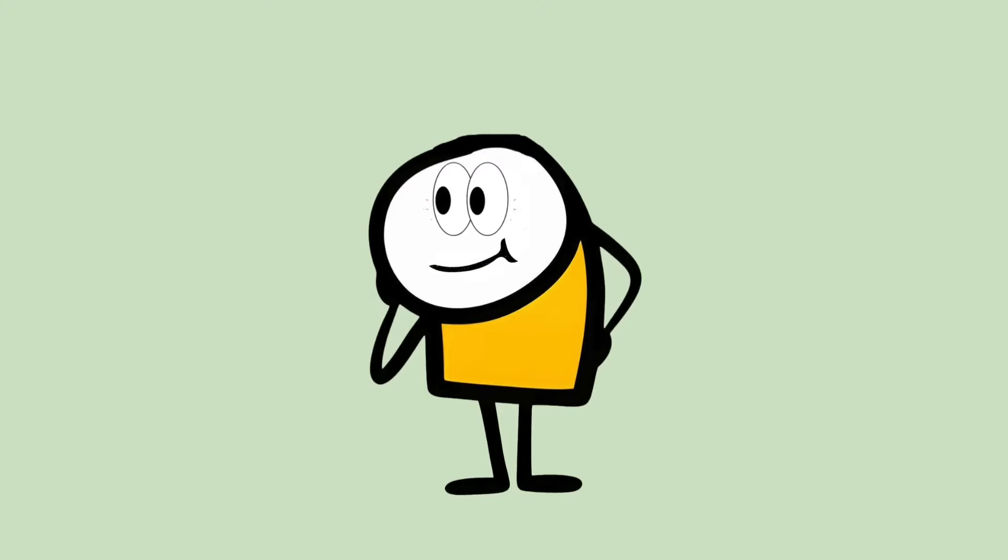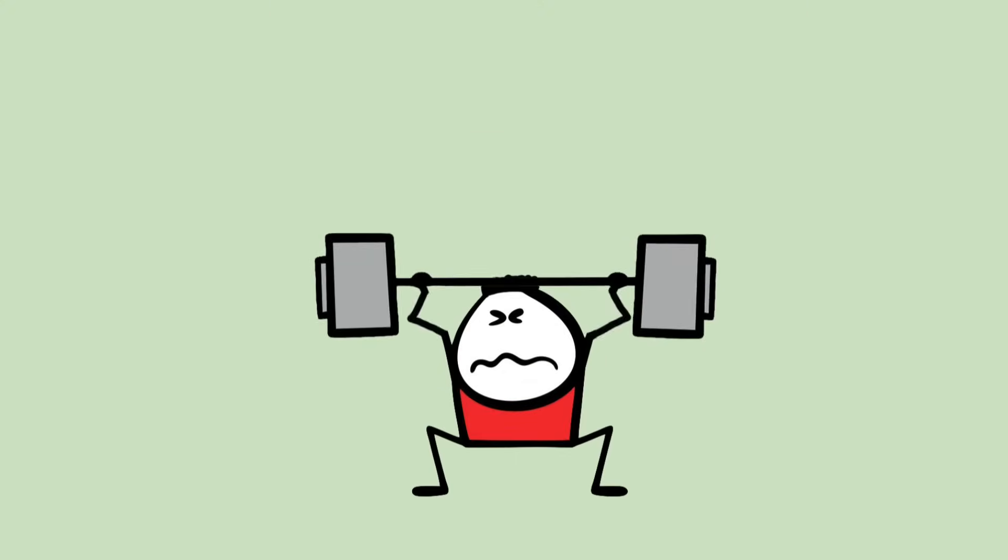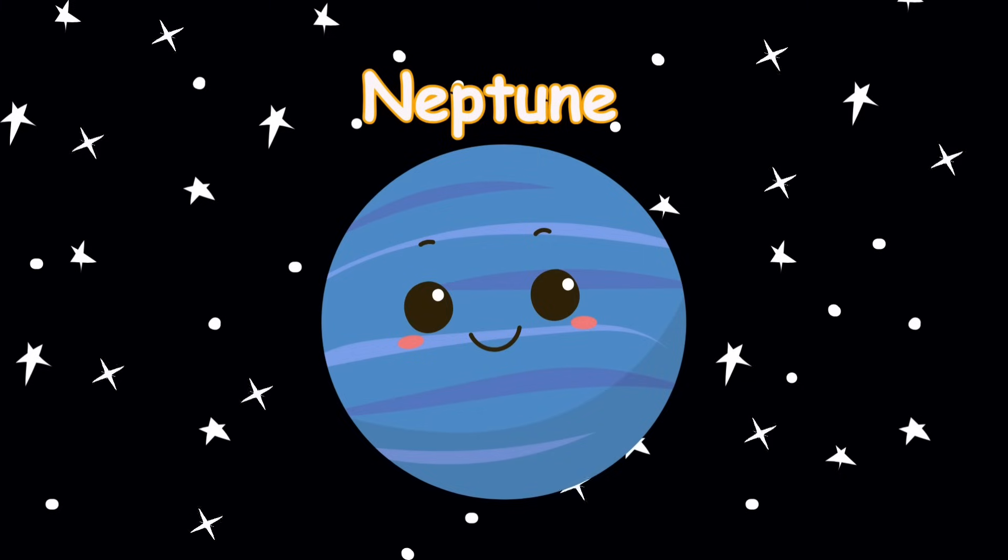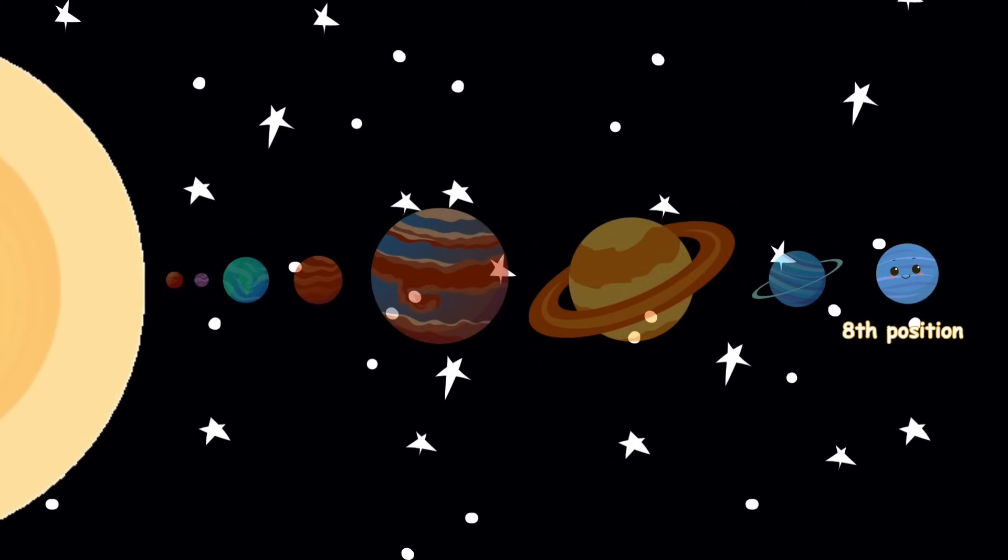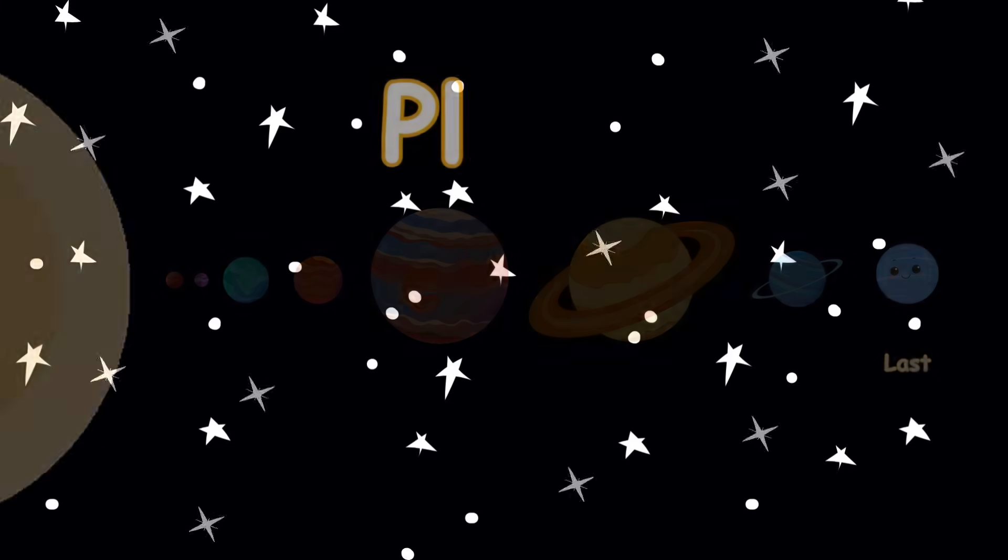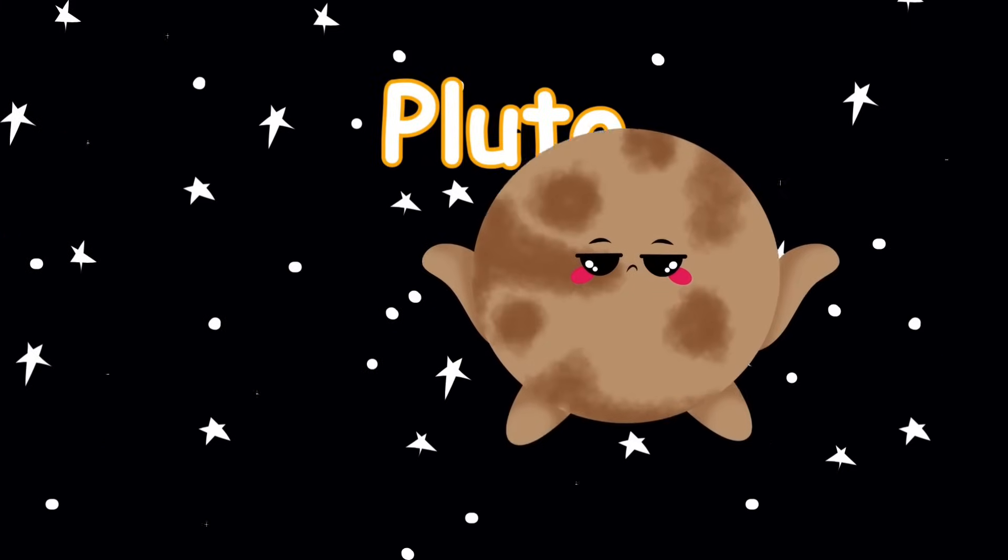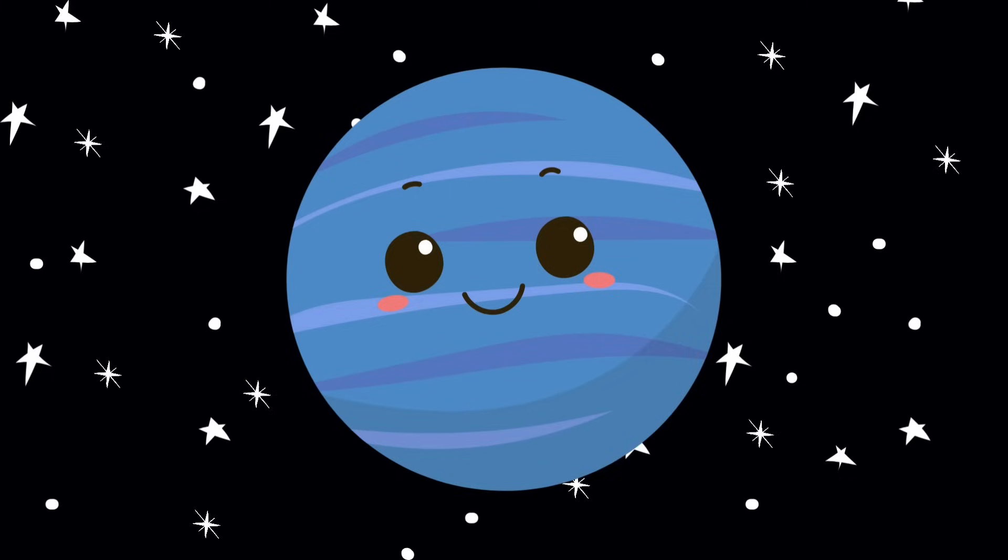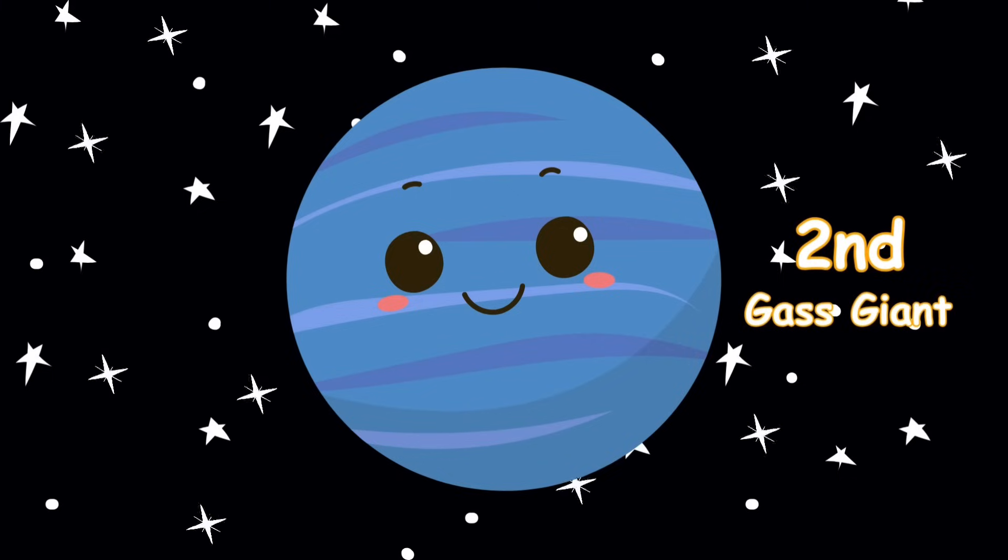You know how it feels to be picked last in gym class? That's Neptune every single time. It's the eighth planet, dead last. And it only became the last again because poor Pluto got booted. Before that, Neptune wasn't even the favorite underdog. It was just the second forgotten gas giant.